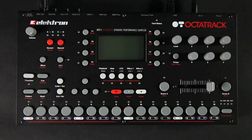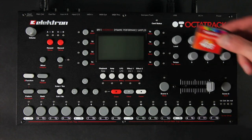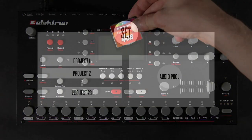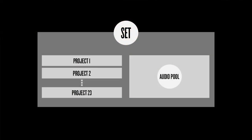We will be starting from scratch with an empty compact flashcard. First, let's take a look at the structure of the Octatrack. A set is the top level structure of the Octatrack. It could contain a near unlimited amount of projects plus one audio pool. The amount of samples in the audio pool as well as the amount of projects are limited only by the size of the compact flashcard.